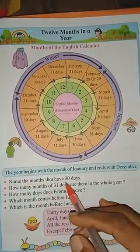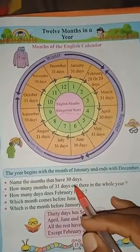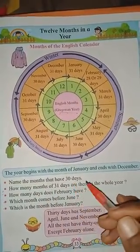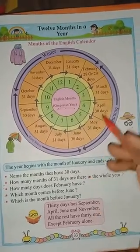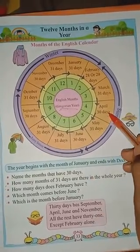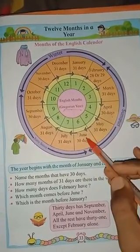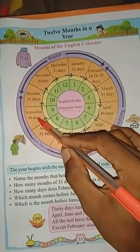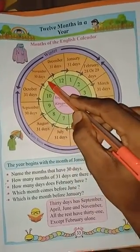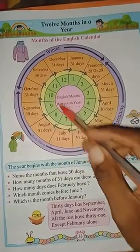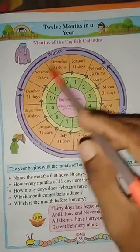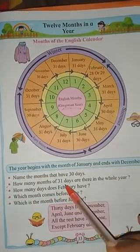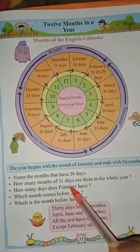Now a question: name the months that have 30 days. The months with 30 days are April, June, September, and November — all these months have 30 days.